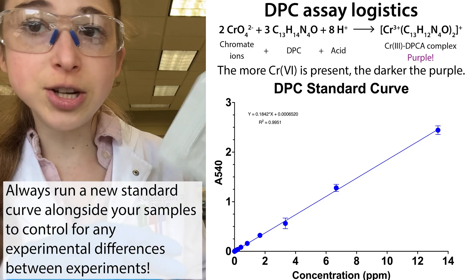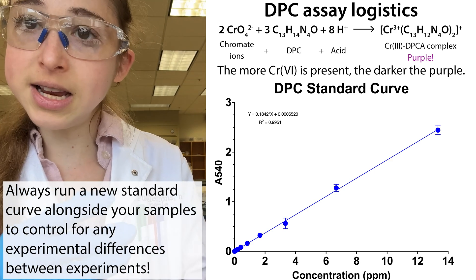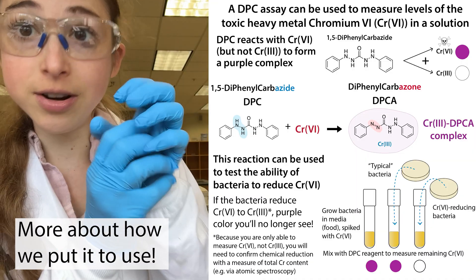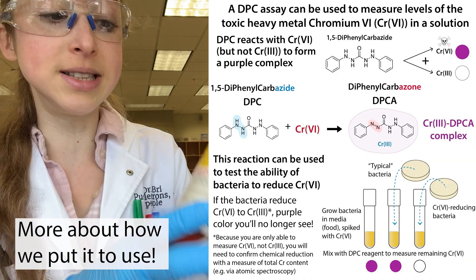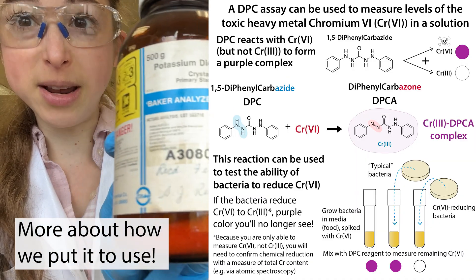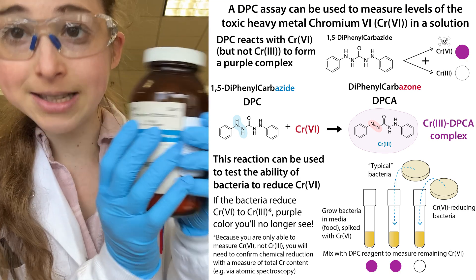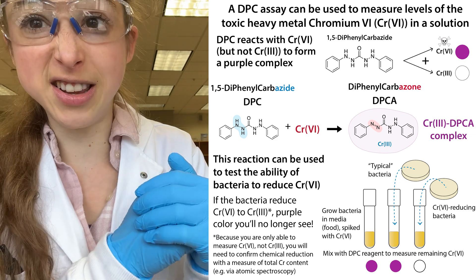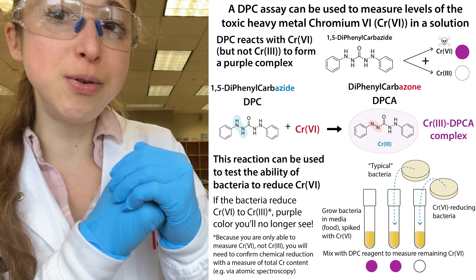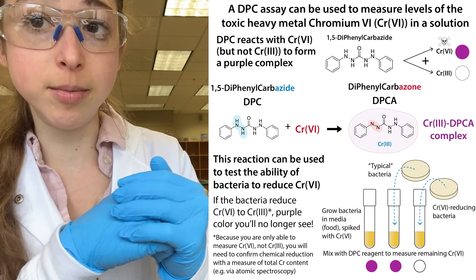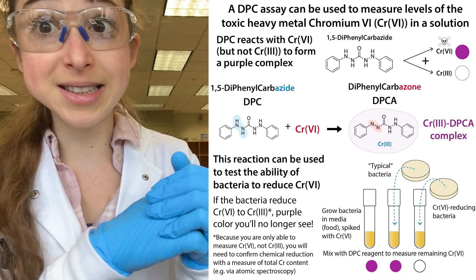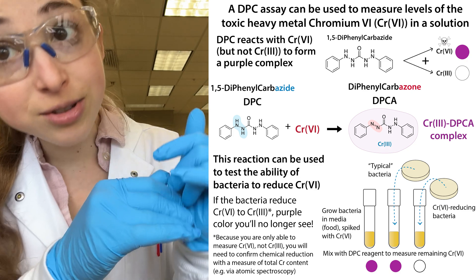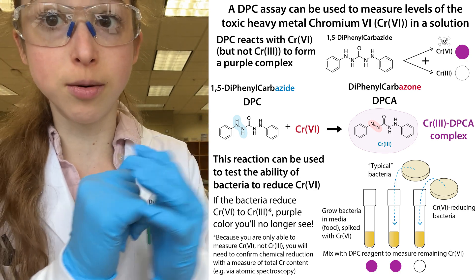Then you take that information, apply the trend line, and see whether the bacteria removed the chromium — fingers crossed. We grew bacteria in the presence of potassium dichromate, spiking their food with chromium-6. Normal bacteria will typically die, but bacteria that can reduce chromium-6 will remove it from the media by converting it chemically to chromium-3.